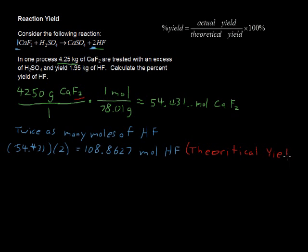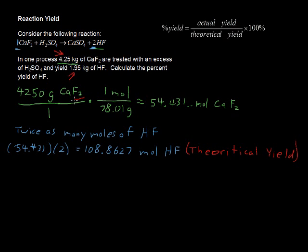In a perfect situation, with this much CaF2 — calcium difluoride — we would get this much hydrogen fluoride, the HF — and that's theoretically. But we got 1.95 kilograms as our actual yield. So let's convert the theoretical yield into grams.